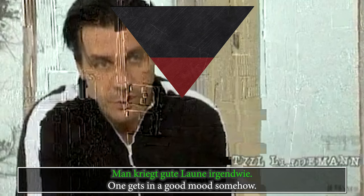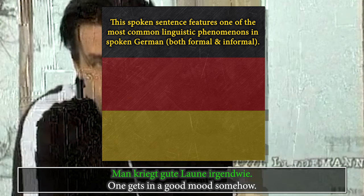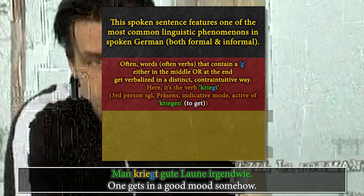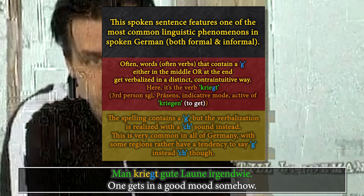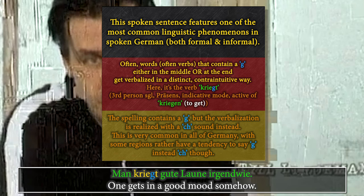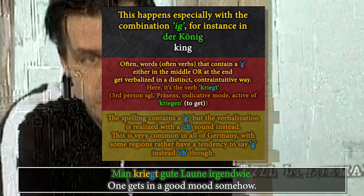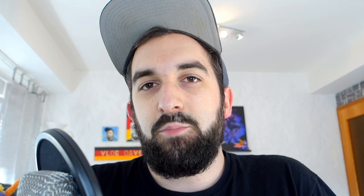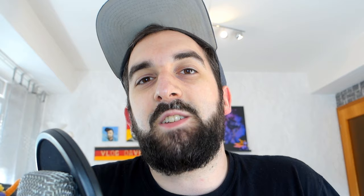This is a great example of a highly typical phenomenon and one of the most common differences between spoken and written German — both formal and informal. The verb 'kriegt' is spelled with a G, but when most Germans verbalize it, the G is pronounced like 'ch'. This happens mostly regardless of specific dialects or regiolects, though some Germans might also verbalize it as a G due to their specific dialect — both are possible. This applies to many Gs inside words or at the end, for instance in 'König' — der König, the king. Both verbalizations are correct; the spelling stays the same.